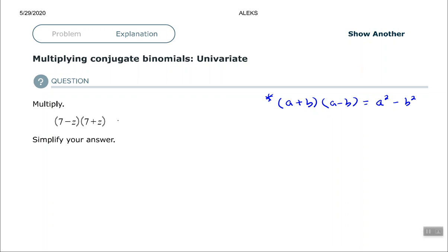All right. So the rule says that if we have that, then I can get to the answer by squaring the first term minus squaring the second term. And seven squared is 49, and z squared is z squared. And that's the answer multiplied out.